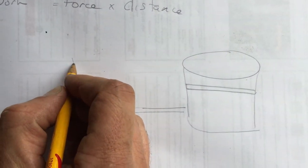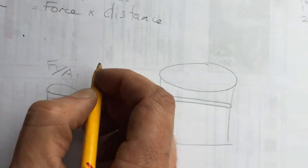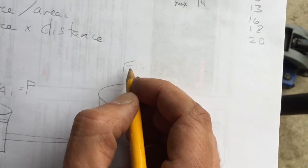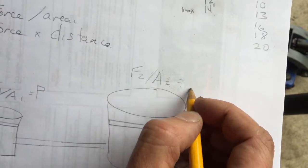So force one over area one equals P, force two over area two equals P. So the larger the force to keep the pressure constant, that's how you lift a jack.